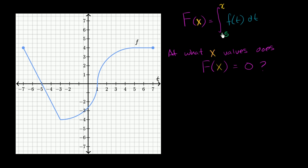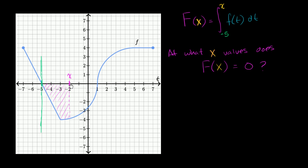So let's just think about what this function capital F of x is really talking about. One way to think about it is it's the area between t equals negative 5 and t equals x that is below the function f of t and above the t-axis. And if the area is the other way around — if it's below the t-axis and above the function — it's going to be negative area. So we're looking at t equals negative 5, which is this boundary right over here. And if you pick an x value, let's just say x were negative 2, capital F would describe this area, and it would be a negative area because the function is below the t-axis. So capital F of negative 2 would be negative.